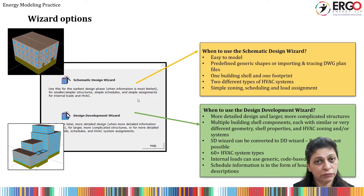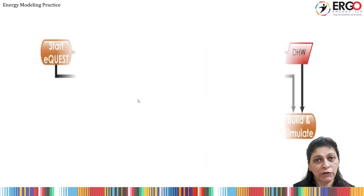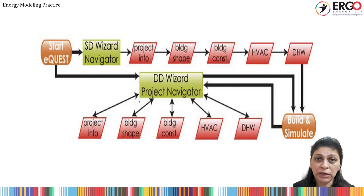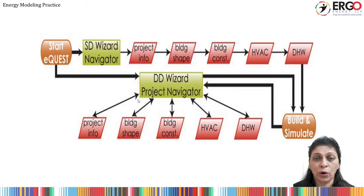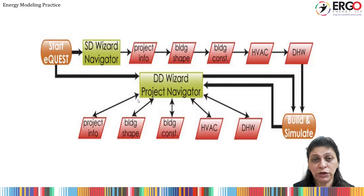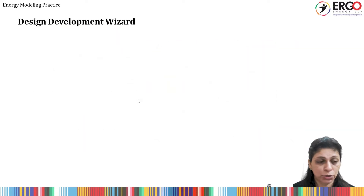What are the limitations, and when you are looking for multiple HVAC systems, more complicated geometry, or multiple shells — then how DD wizard is helpful is discussed here. Normally SD wizard is considered a linear way of making a building, wherein we progress from one stage to another one by one, while DD wizard is a parallel way of working where you can return back to the navigator and go to all concerned tabs like building shell, hot water, or airside HVAC system. That major difference between the two is explained in these two modules.